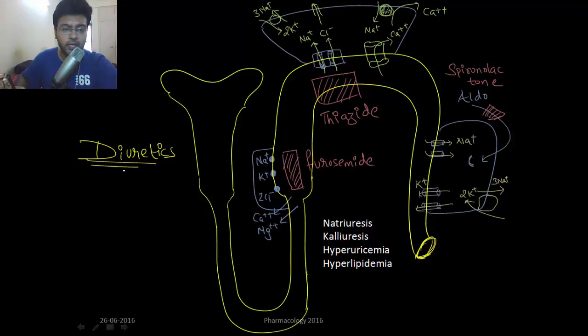Okay, so next we have diuretics. Here is the proximal convoluted tubule, the descending limb of loop of Henle, the thick ascending limb of the loop of Henle. Here is the DCT and the collecting tubule.